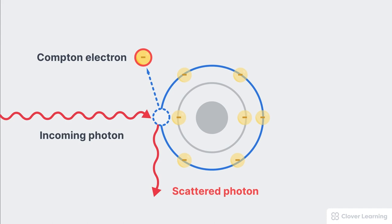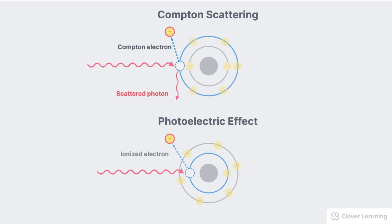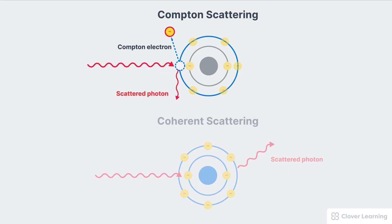With Compton scattering, it's a photon in with an electron and a scattered photon out. Pay attention to how Compton scattering is different from the other interactions. With photoelectric effect, this interaction takes place in an inner shell electron and it results in only an ionized electron — there's no scattered photon.